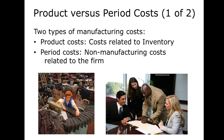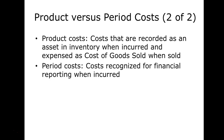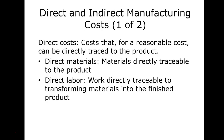Product costs versus period costs: costs related to inventory are product costs, while period costs are non-manufacturing costs related to the firm — depreciation is an example of a period cost. Period costs are recognized as incurred, so they're not considered in cost accounting the same way. Product costs are recorded as assets in inventory when incurred and moved to cost of goods sold when the item is actually sold. There are many terms in this chapter — some very similar, some very different.